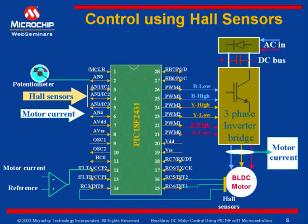The Hall sensors can also be connected to the input capture module here, which is configured as input capture — the motion feedback module configured as IC1, IC2, and IC3. The input capture module has a mode in which it generates an interrupt on every pin transition, making it ideal for Hall sensor interface.